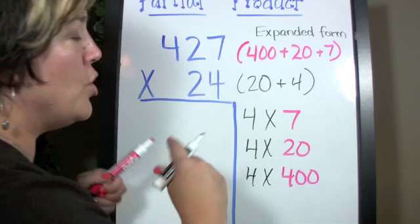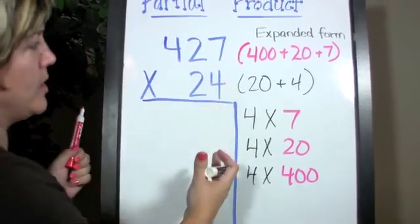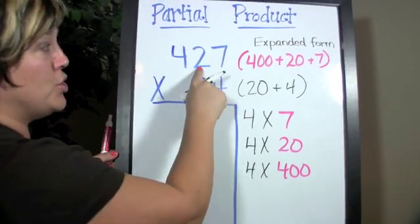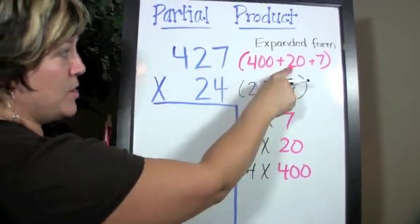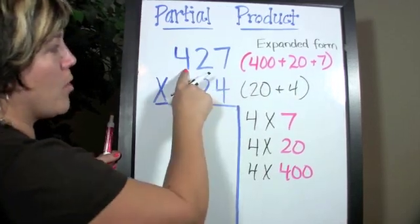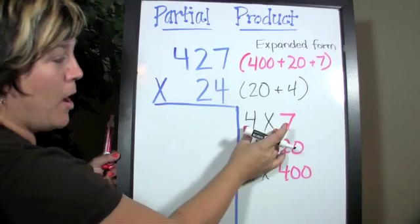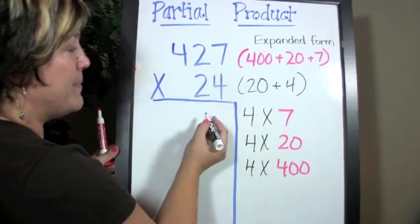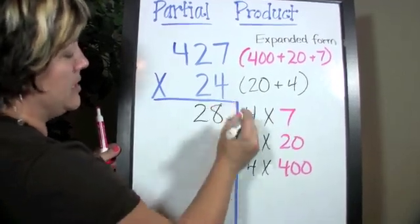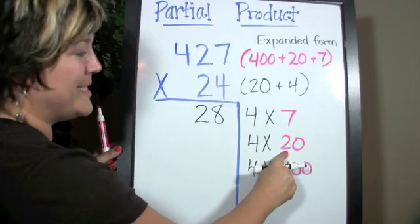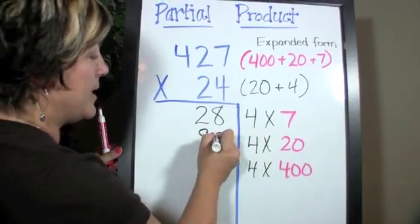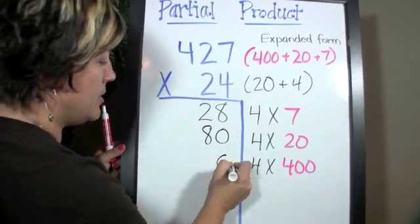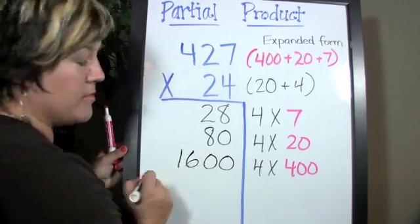This is something that we would do in long multiplication. I would say 4 times 7, then 4 times the 2 which is really 20, and 4 times the 4 which is really 400 — so we're doing it just part at a time. Let's write these out: 4 times 7 is 28, 4 times 20 is 80, and 4 times 400 is 1,600.